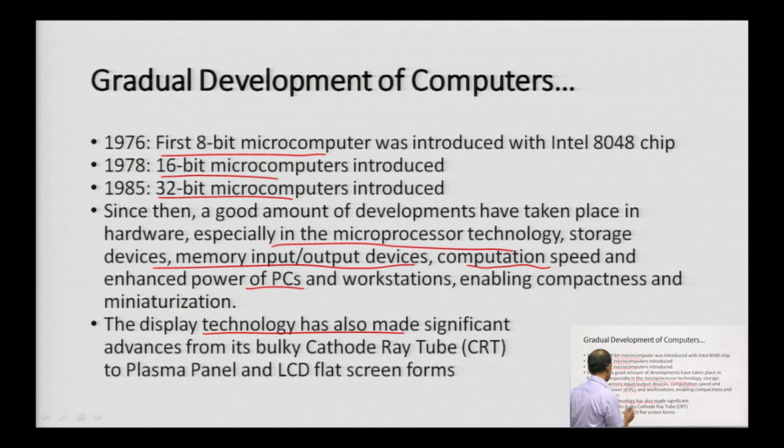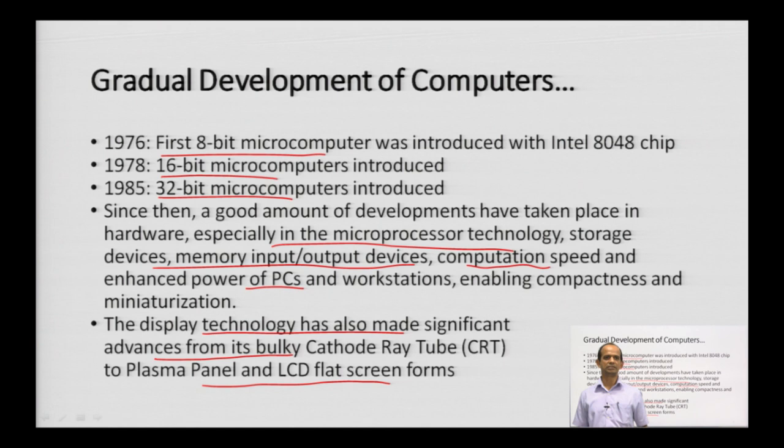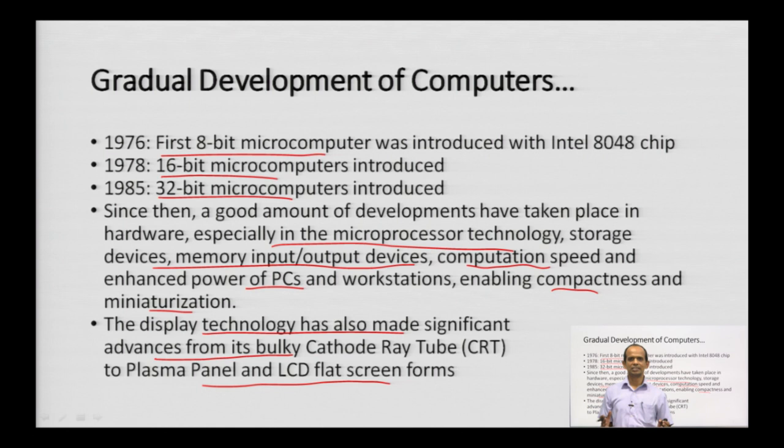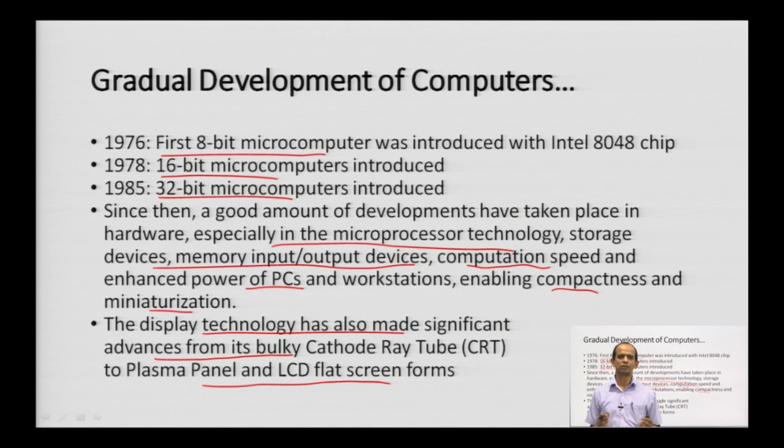Display technology has also made significant advances, from the bulky cathode ray tube to plasma panels and then LCD and LED flat-screen forms. Mobiles now have LCD and LED flat screens. Compactness — a single device serving many purposes — and miniaturization — reduction in size — are both on the rise. Earlier computers were bulky; today a mobile is extremely small.